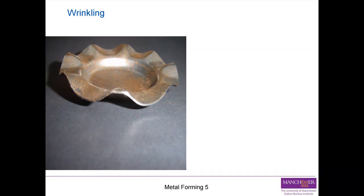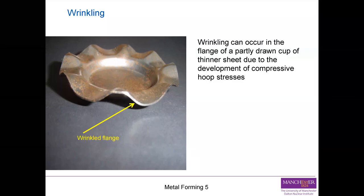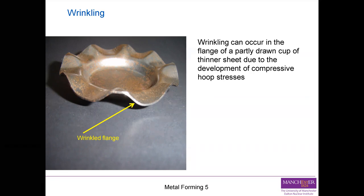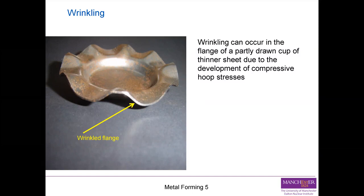What we see in this picture is a circular sheet of material which we want to draw into the shape of a cup. Wrinkling is something that can happen — we can see here a wrinkled flange which is partially drawn. The reason why wrinkling occurs is because of the stress state generated when you pull the material down into the die. We are generating compressive hoop stresses — stress around the circumference of the blank — and this can result in buckling, meaning out-of-plane deformation.